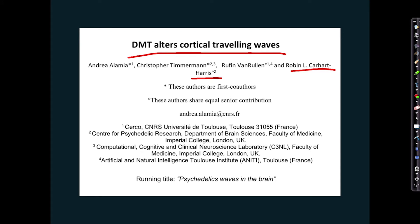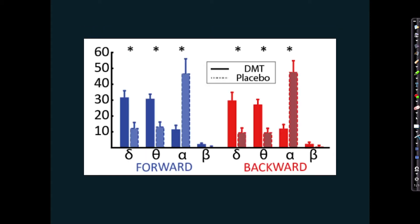This diagram shows the power of waves that are traveling in different directions. We've got forward traveling waves on the left — these are bottom-up waves traveling up the cortical hierarchy, which are the error signals carrying information from the environment up to the higher end of the model. Then we've got top-down waves, which they call backward waves, and these are basically the predictions of the model traveling down the cortical hierarchy, predicting the sensory data.